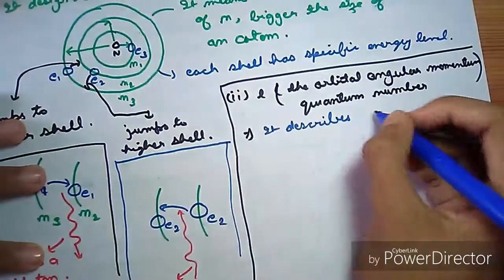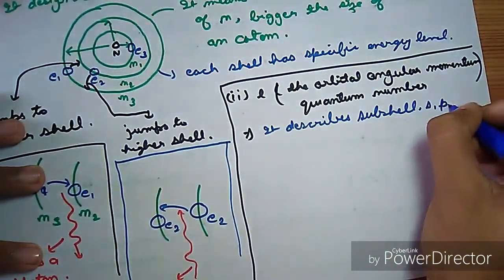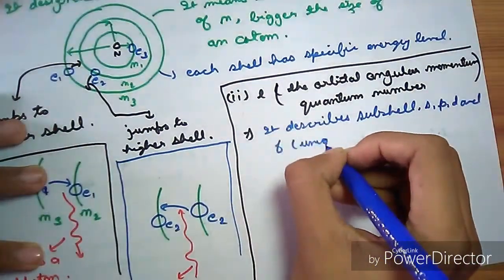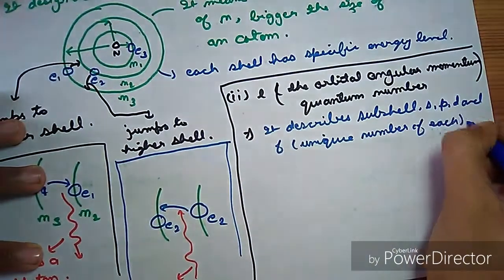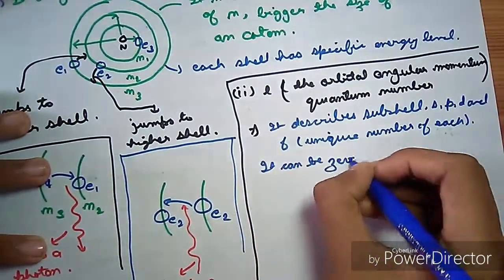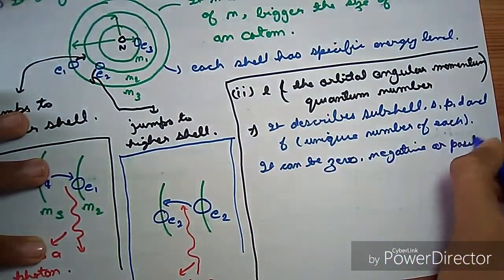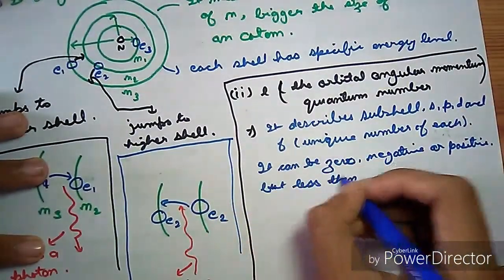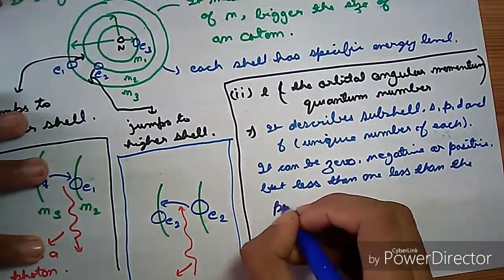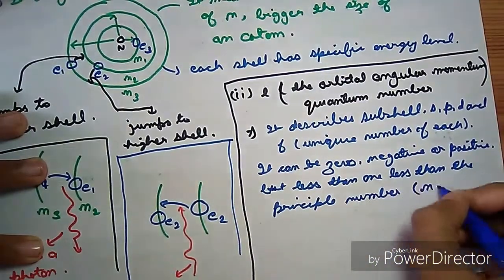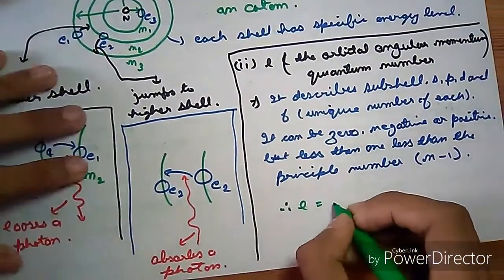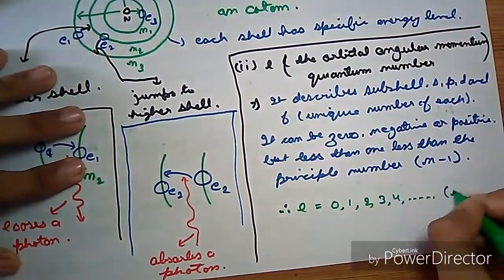It describes subshells S, P, D, and F. L can be 0, negative or positive, but not more than 1 less than the principal number, or N-1. L equals 1, 2, 3, 4 and so on as N-1.